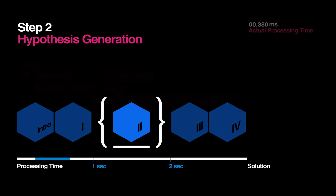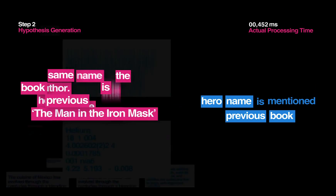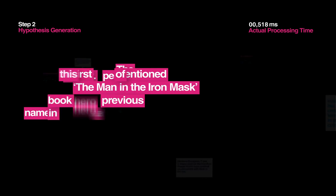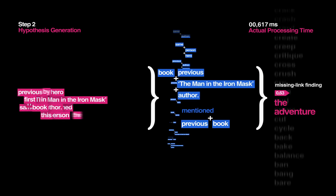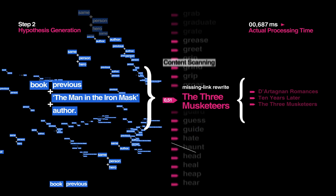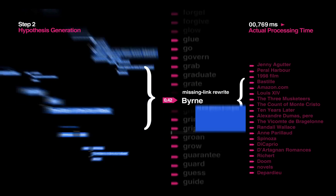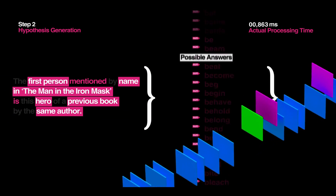Step 2: Hypothesis Generation. For each interpretation of the question, Watson quickly searches through hundreds of millions of documents to come up with thousands of possible answers. At this point, quantity trumps accuracy. It's more important for Watson to generate a large number of possible answers and narrow them down from there, because if the correct answer isn't included during the initial sweep, there is no possible way for Watson to identify and justify the right answer at the end.